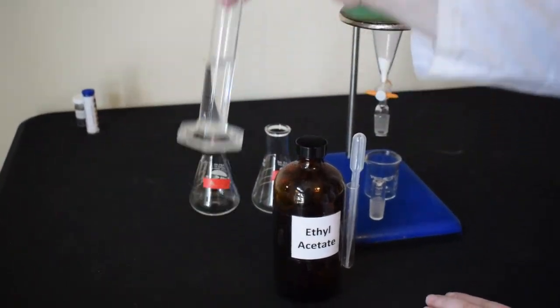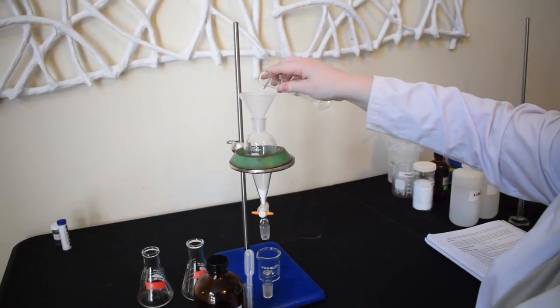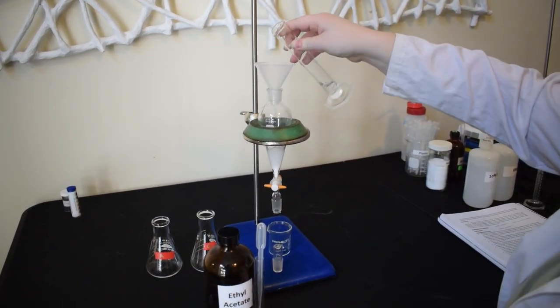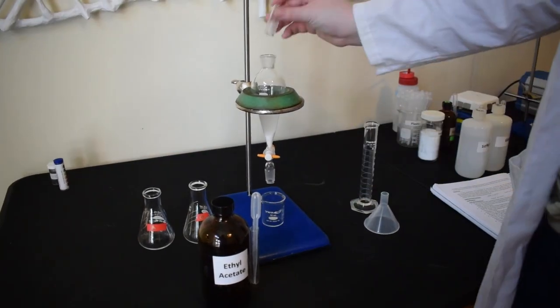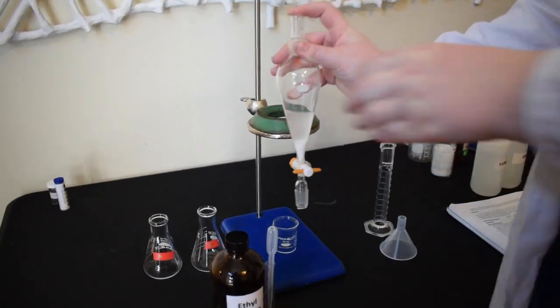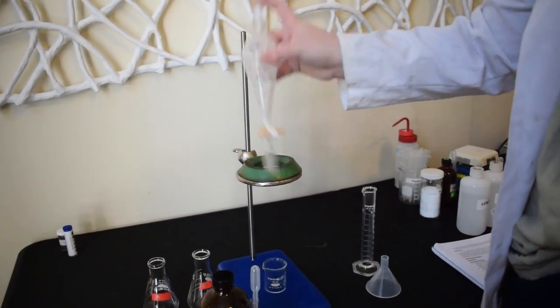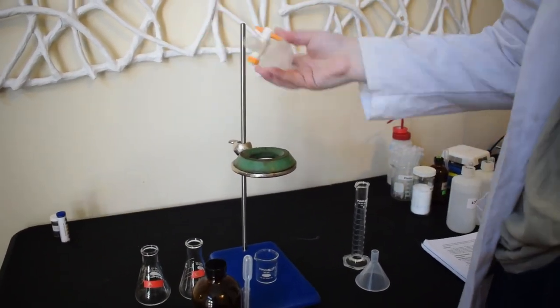We are going to dissolve this Goody's powder in 25 milliliters of ethyl acetate. Once that's added, we are just going to shake until it is mostly dissolved. It won't dissolve 100% in ethyl acetate, but it should get most of the way there.